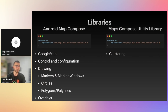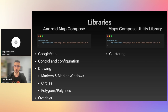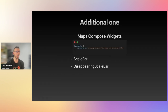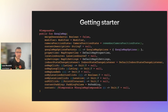The library for Google Maps with Compose has been split into three libraries. There is the android-map-compose library, which is the main one containing the GoogleMap composable, controls, configuration, and a lot of drawing — markers, marker windows, circles, polygons, polylines, and overlays. The second library is for clustering: the map-compose-utility library. The third, smallest one is map-compose-widgets, containing a scale bar and a disappearing scale bar.